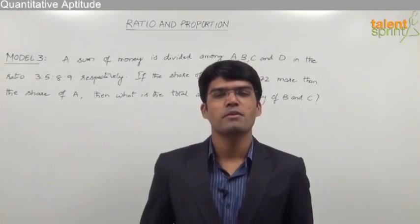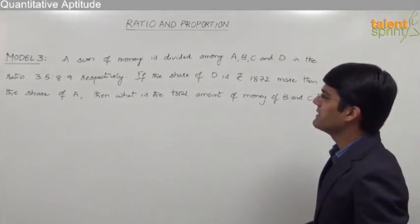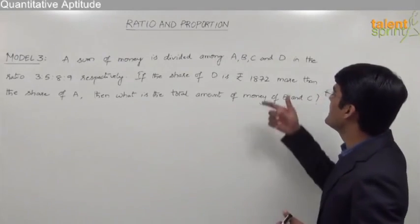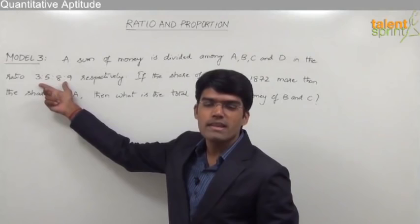Let us now discuss the third model from ratio and proportions. The question here is: a sum of money is divided among A, B, C, and D in the ratio 3 is to 5 is to 8 is to 9 respectively.